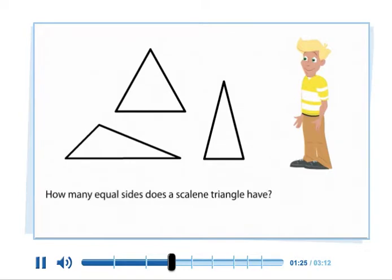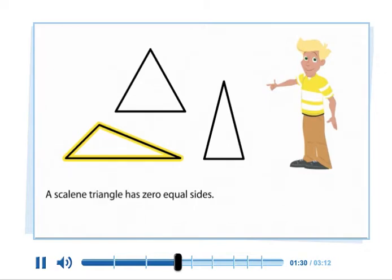How many equal sides does a scalene triangle have? A scalene triangle has zero equal sides.